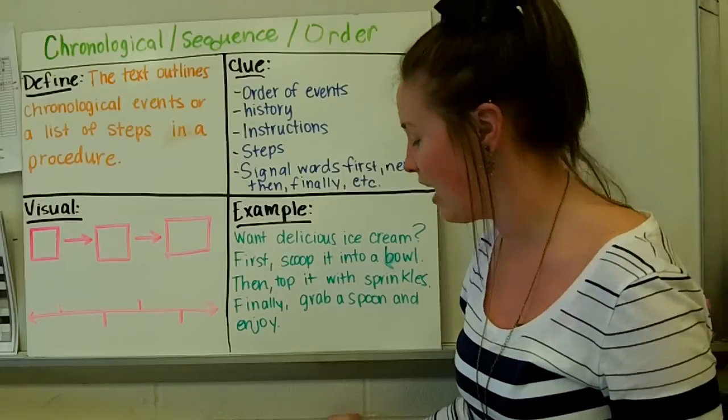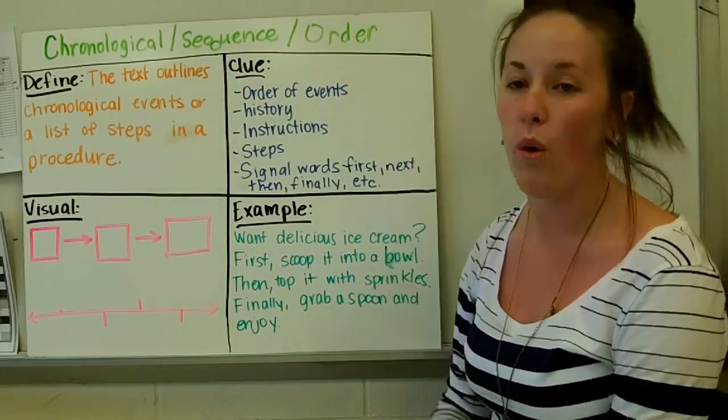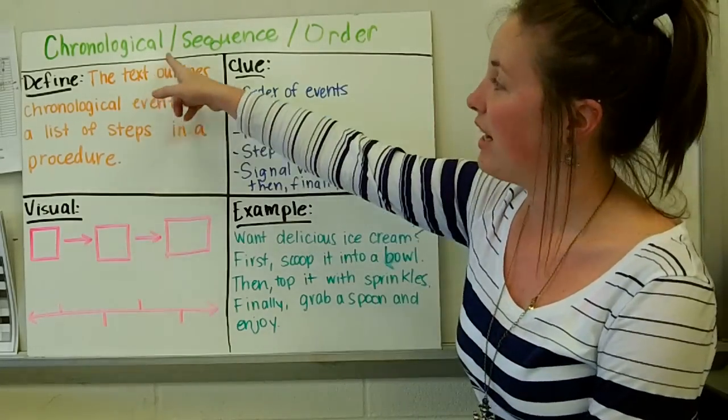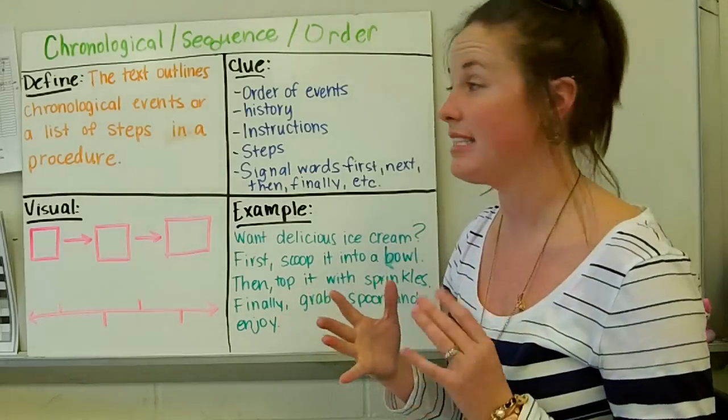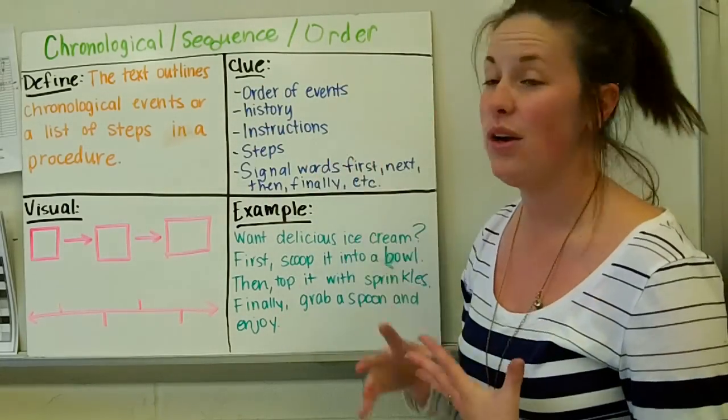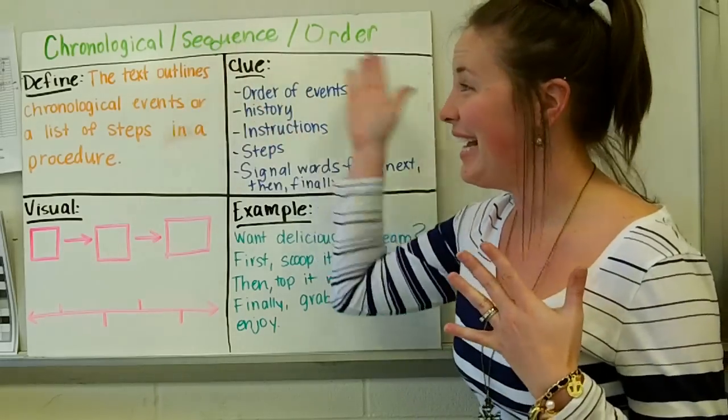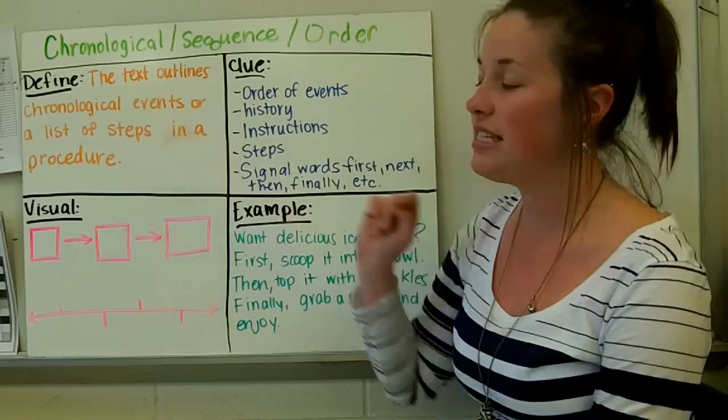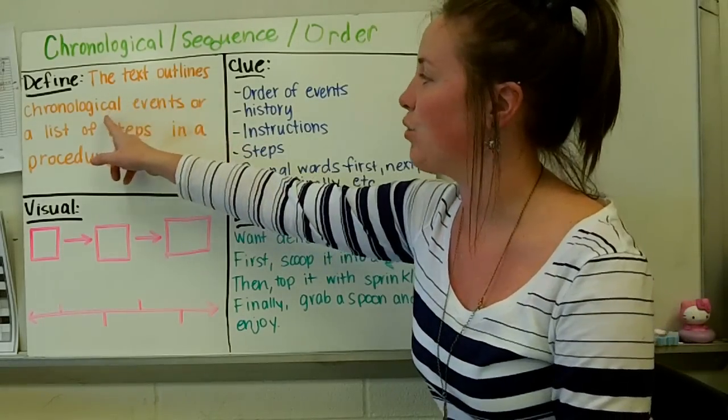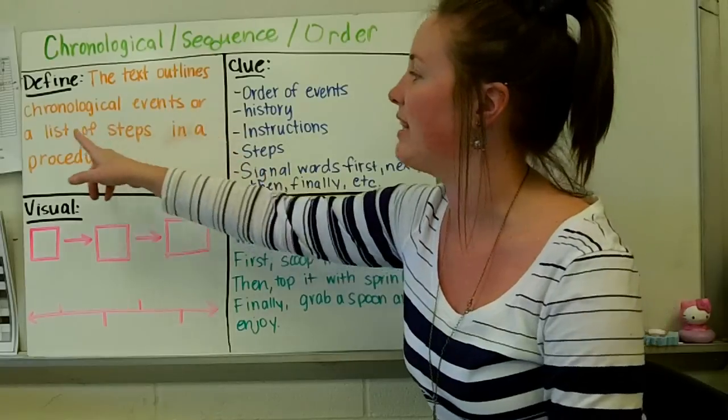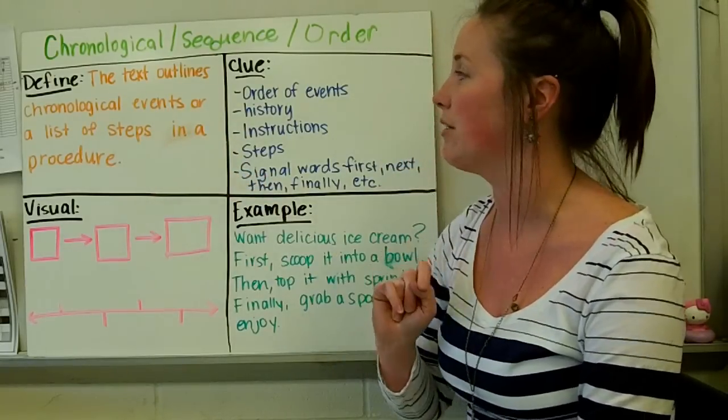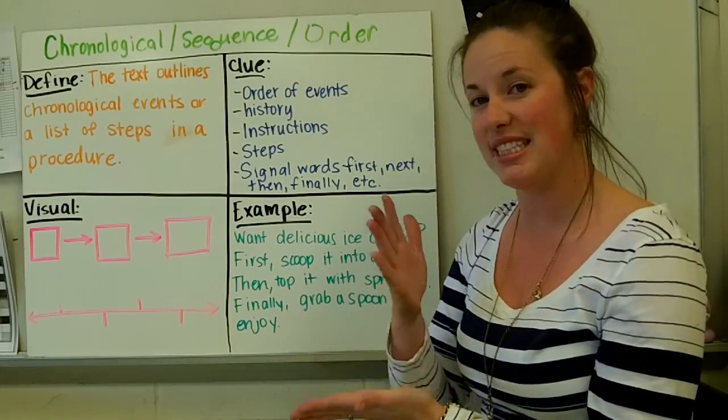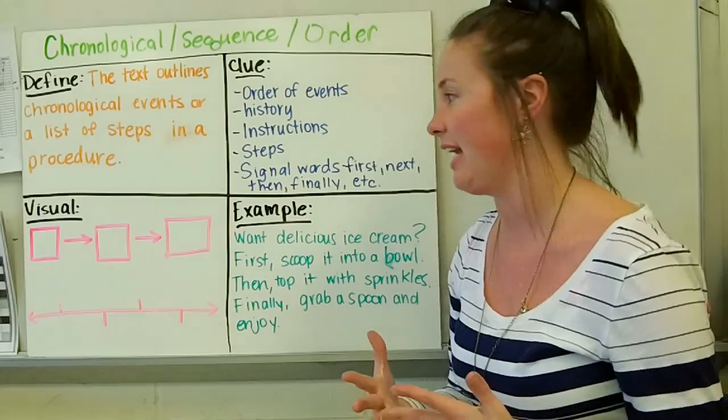The last one we are going to talk about is chronological, sequence, or order. Now, you may see it written in different ways. Chronological is one way to say it. Sequence is another way to say it. And order is another way to say it. So if you see any one of these words, it means the same structure. Nothing has changed. So a good definition would be the text outlines chronological events or a list of steps in a procedure. So just so we are on the same page, chronological means to sequence beginning to end, just as we do everything else.